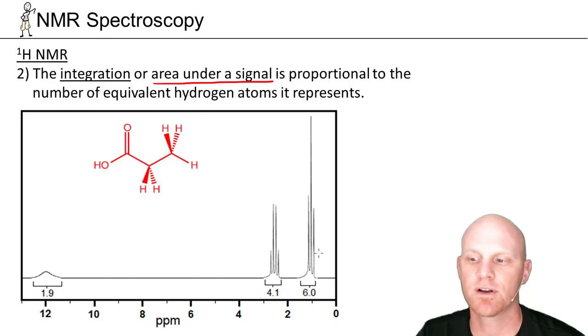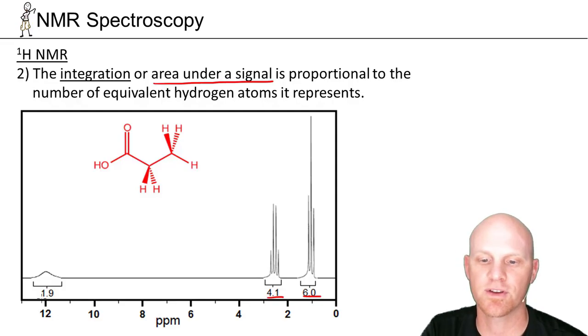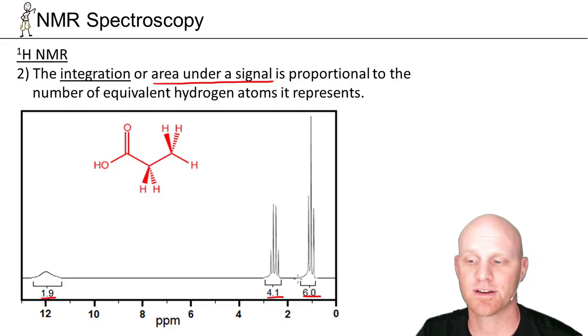Our signals here are typically composed of multiple peaks, but there's an area underneath. Oftentimes the bottom of a spectrum will quantify those areas in some kind of arbitrary units. Here our three signals have areas of 1.9, 4.1, and 6.0 respectively.